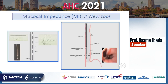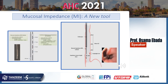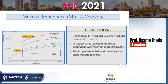There is also a new mucosal impedance tool, which is passed through the endoscope and can detect reflux during endoscopy. Studies show it can differentiate patients with non-GERD conditions such as eosinophilic esophagitis from those with GERD, as detected by mucosal impedance.